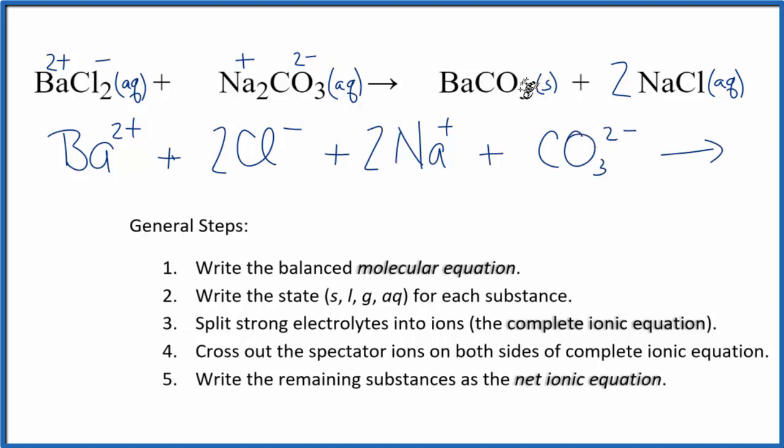These are the reactants. Let's do the products. So this barium carbonate here, BaCO3, we said that's a solid. It's at the bottom of the test tube. So it's not going to be split apart into ions. So we just write BaCO3. And that's it. It's a solid. We don't split apart solids, liquids, or gases in net ionic equations.